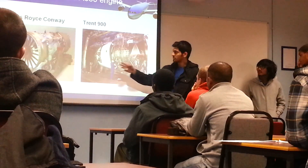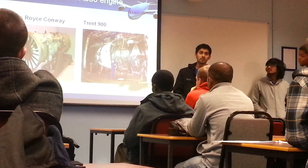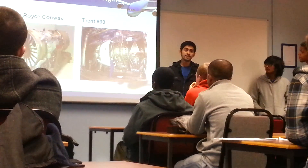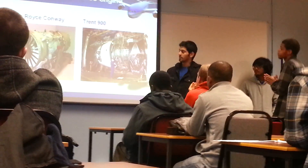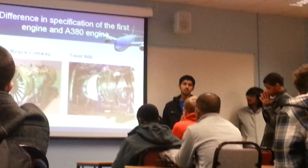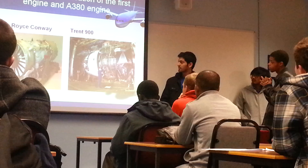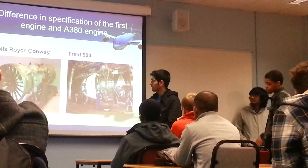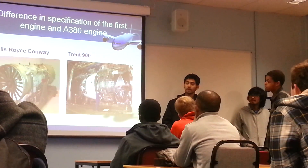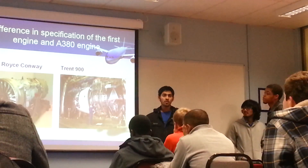Comparing the first turbofan engine, the Rolls-Royce Conway built in the 1950s, to the latest Trent 900: the Conway had a fan blade diameter of 37.6 inches and a maximum thrust of 17,000 lbf. The Trent 900, used in the A380, has a maximum fan blade diameter of 117 inches — making it the largest turbofan ever built — with a maximum thrust of 70,000 to 80,000 lbf. The Trent 900 also features built-in software for engine monitoring.